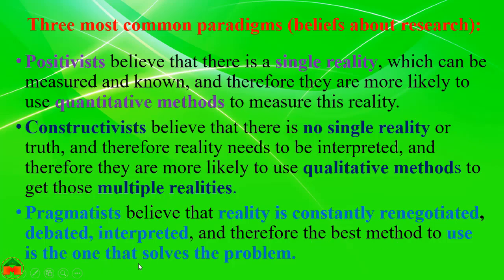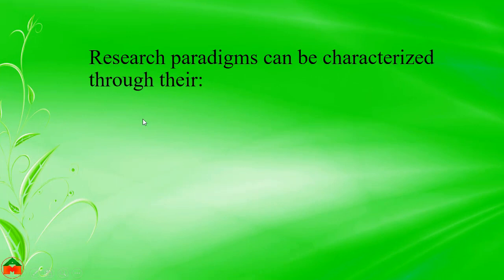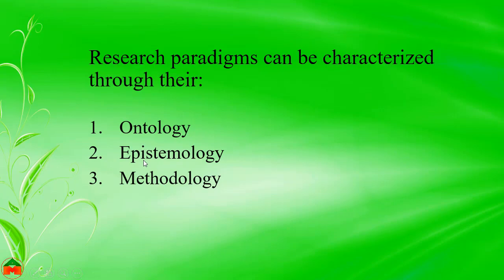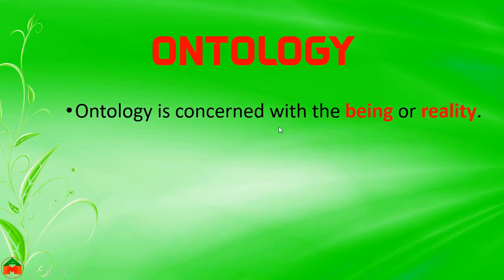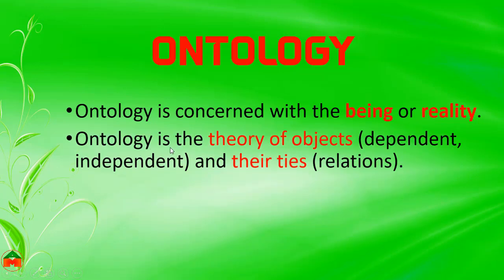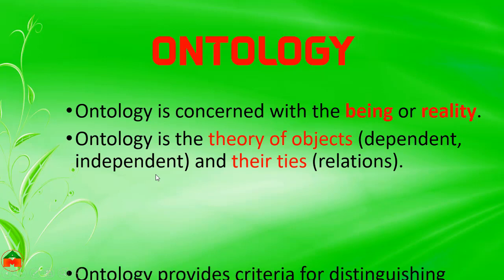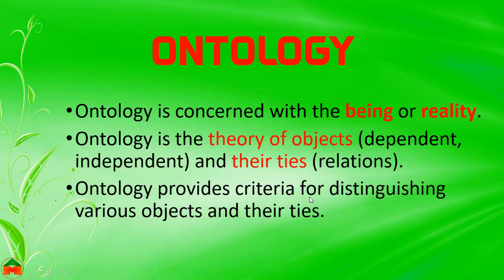Research paradigms can be characterized through their ontology, epistemology, and methodology. Ontology is concerned with being or reality — it deals with the theory of objects and their relations. Those objects may be dependent, independent, or anything else. Ontology provides criteria for distinguishing various objects and their ties.